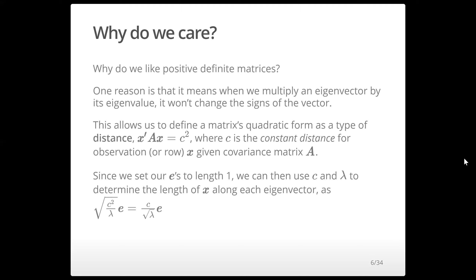Since we set our eigenvectors as e's with length one, we can use the constant distance c and the eigenvalues to determine the length of our observation x along each eigenvector as c divided by the square root of the eigenvalue, times the normalized eigenvector.